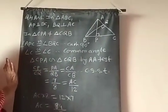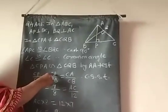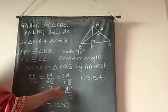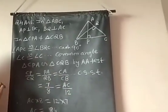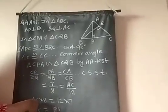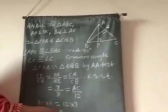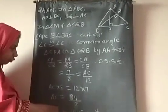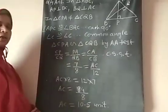By cross multiplication, 8 multiplied by AC equals 12 multiplied by 7, which is 84. Therefore AC equals 84 upon 8, giving 10.5. So the length of AC is 10.5 units.